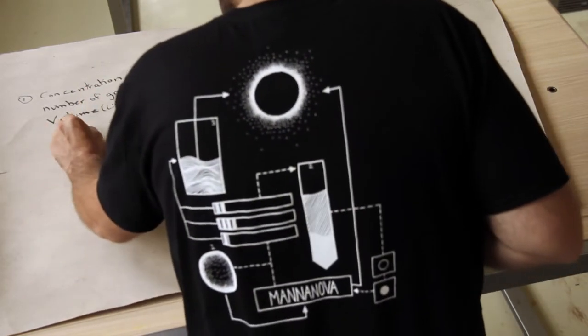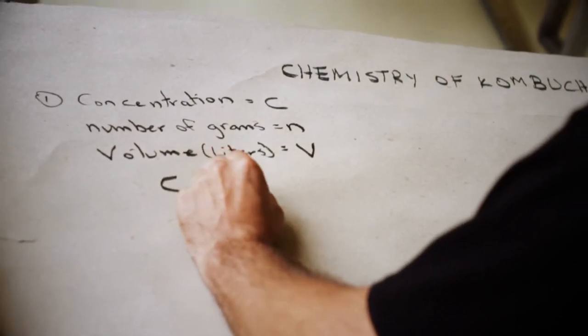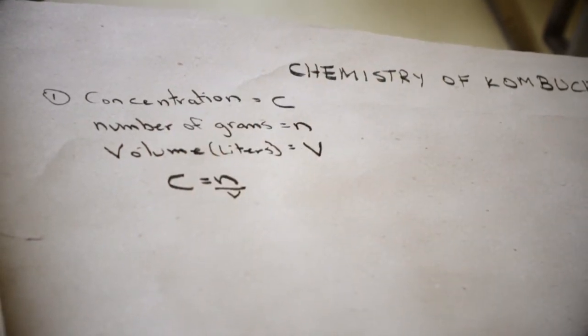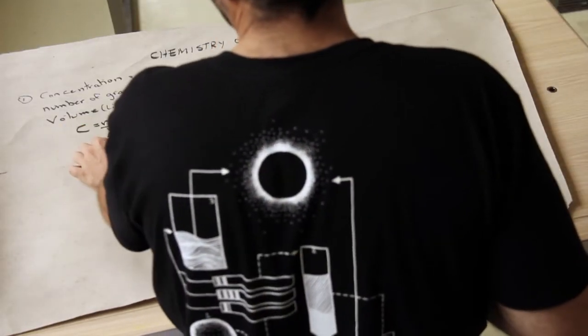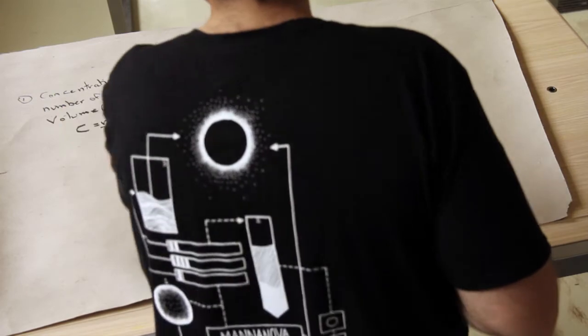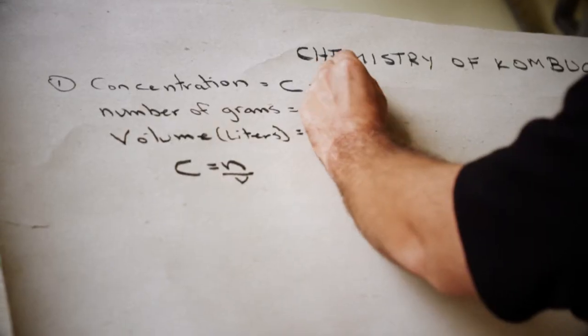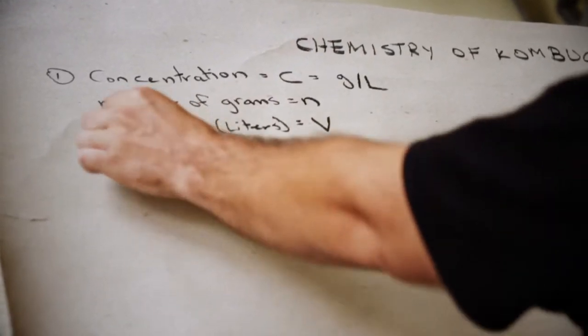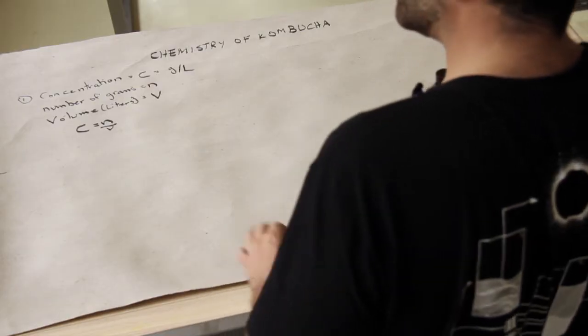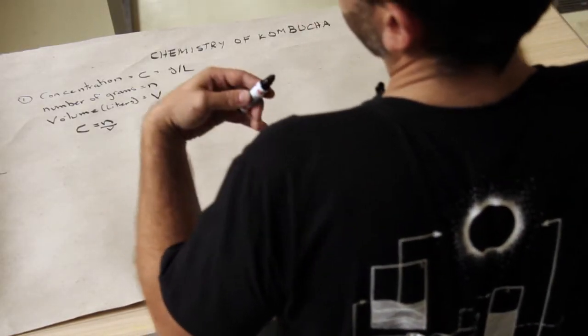So what's the formula we're going to use? C equals n over V. So concentration is equal to number of grams over volume. That's why our concentration is in grams per liter. See? Grams per liter, number of grams per liter.